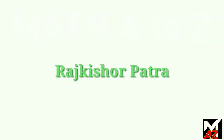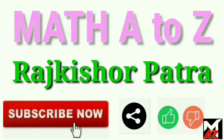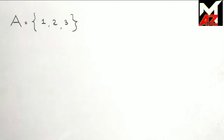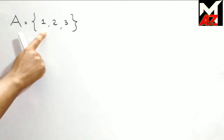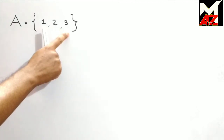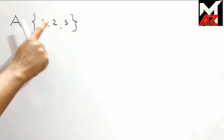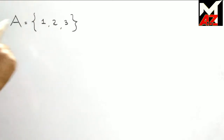Hi friend, welcome all to my educational channel, Math A to Z. We consider a set A which contains three symbols: 1, 2, and 3. These are not numbers — these are symbols.